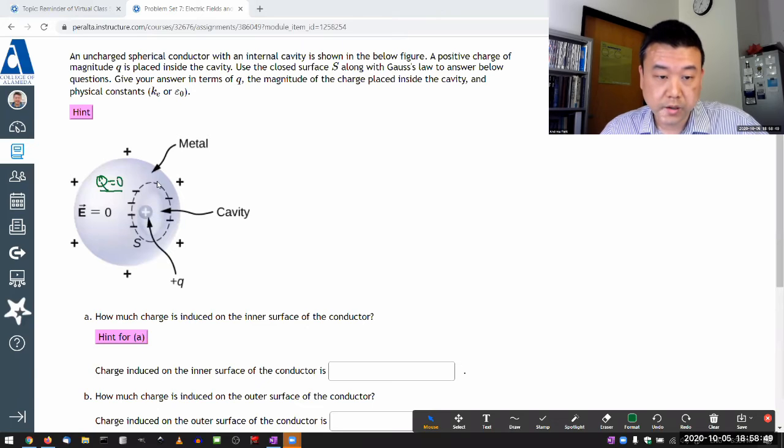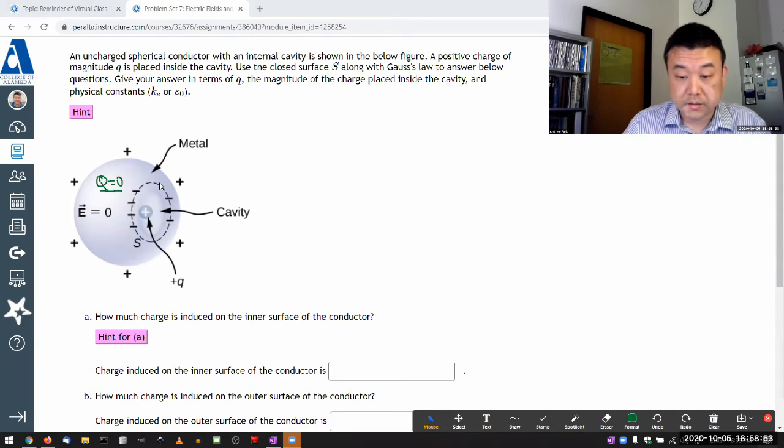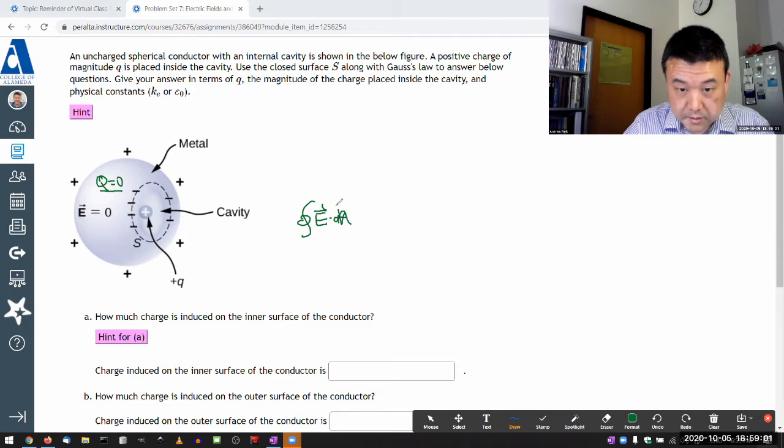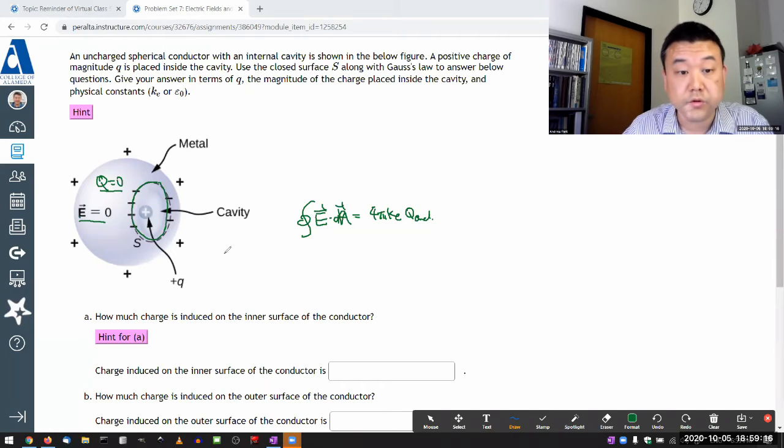So what you are doing with this Gaussian surface is you go through this expression that the net electric flux through the Gaussian surface is equal to 4π times Coulomb constant times the charge enclosed. And this is the rare circumstance where you actually know the flux first, because you know that the electric field is zero inside the conductor, you know that flux has to be zero.